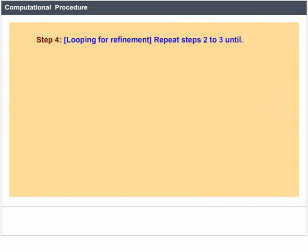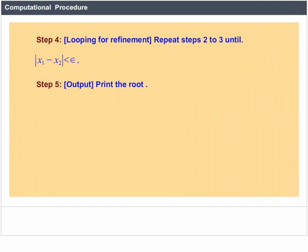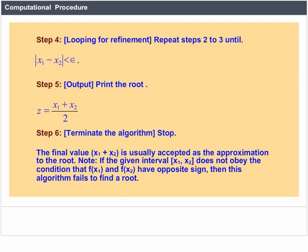Step 4: Looping for refinement — repeat steps 2 to 3 until modulus of (x1 - x2) < epsilon. Step 5: Print the root z = (x1 + x2) / 2. Step 6: Terminate the algorithm. Stop. The final value (x1 + x2) / 2 is usually accepted as approximation to the root. Note: if the closed interval [x1, x2] does not satisfy the condition that f(x1) and f(x2) have opposite sign, then this algorithm fails to find a root.